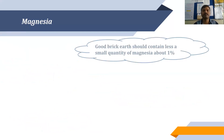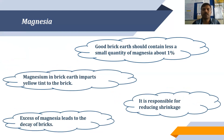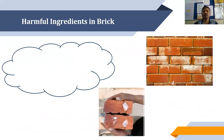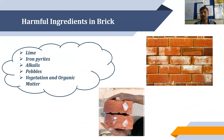The last constituent is magnesia. A good brick earth should contain a small quantity — about 1% — of magnesia. Magnesium in brick earth imparts a yellow tint to the brick and is responsible for reducing shrinkage. Excess of magnesia leads to the decay of bricks. All these constituents should be available in bricks to improve strength, protect from shrinkage, and maintain their shape.